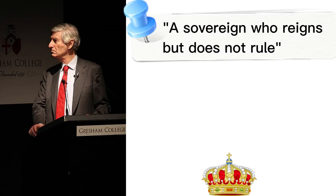Political scientist Vernon Bogdanor has defined a constitutional monarch as a sovereign who reigns but does not rule.